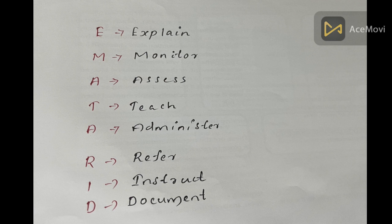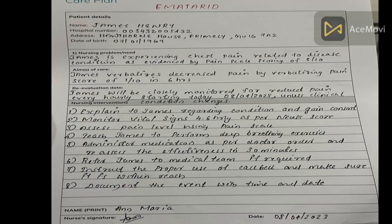You will learn the format and the nursing interventions. Explain to James regarding his condition and gain consent — that is the 1st point. 2nd: Monitor vital signs 4 to 6 hourly as per NEWS score. Then assess pain level using a pain scale.